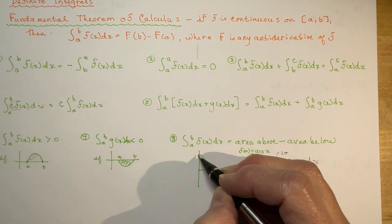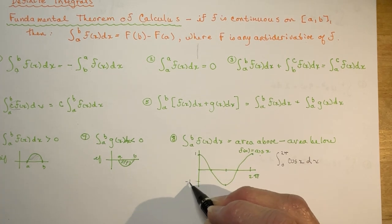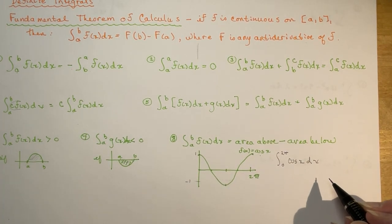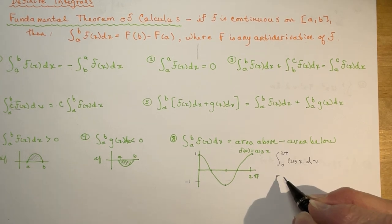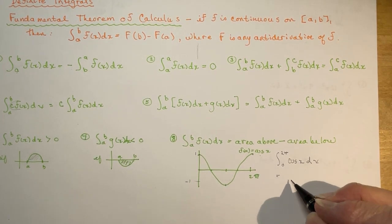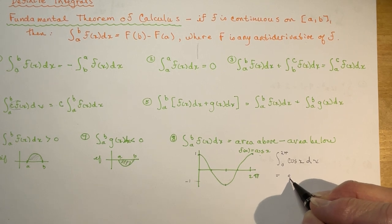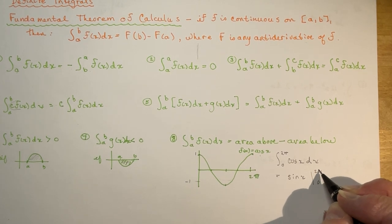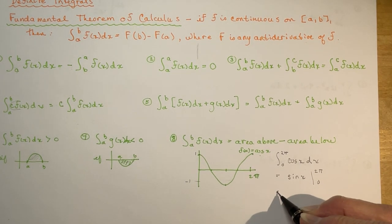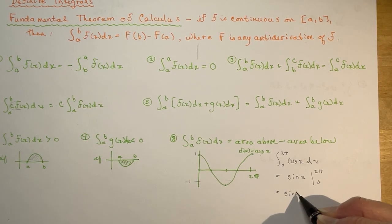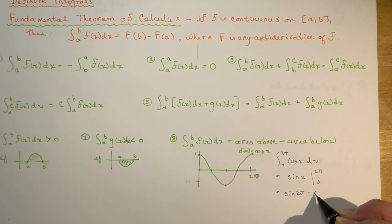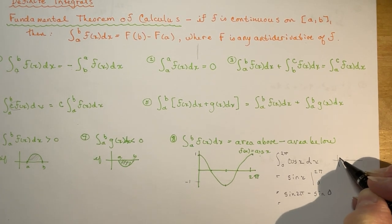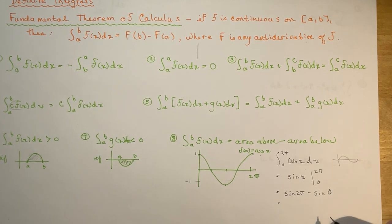So I want to know what is the integral between 0 and 2π of cos(x) dx. There's my cosine — starts at 1, goes to -1, 0 to 2π is the period. The antiderivative of cos x is sin x. So I'm evaluating sin x between 0 and 2π: sin(2π) minus sin(0) — both are 0, so I get 0 area.